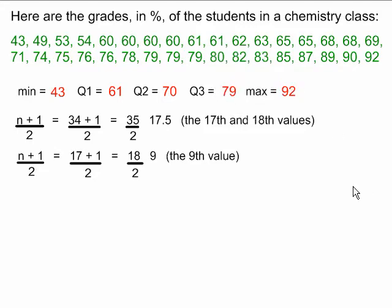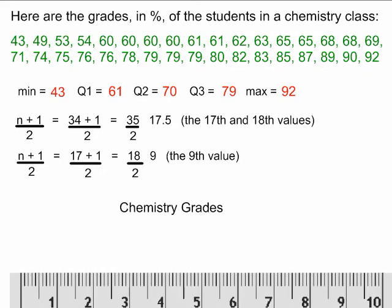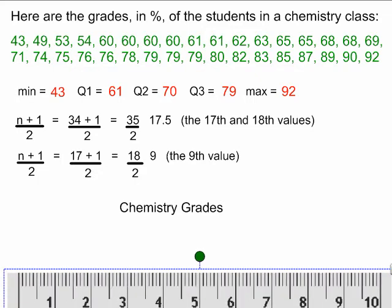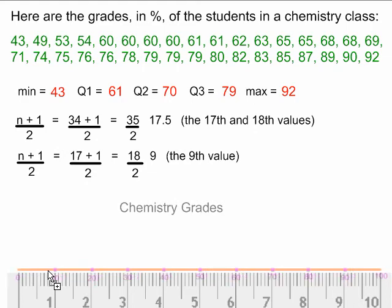Now we're ready to start drawing our diagram. The first thing we need is a title, and I'm going to call it Chemistry Grades. Next, we need to get a ruler and draw our x-axis.